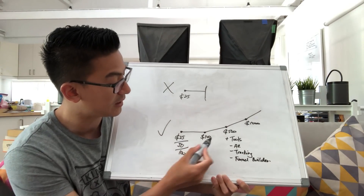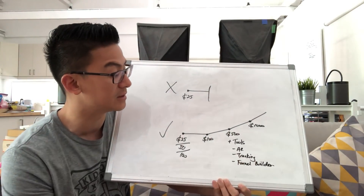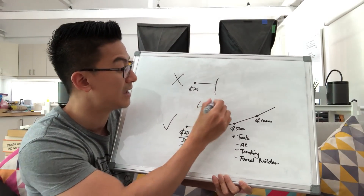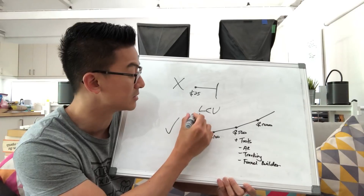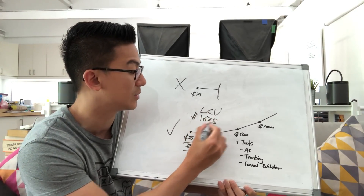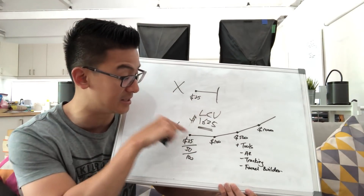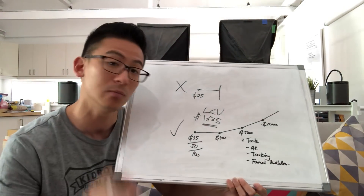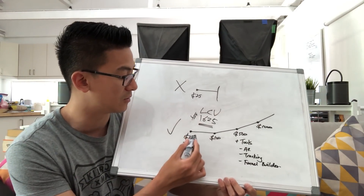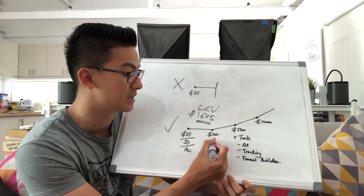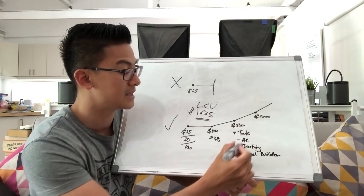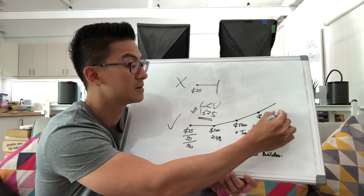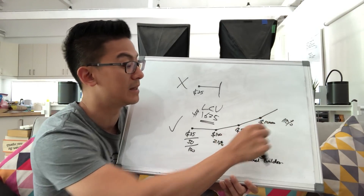If you add this all up — $25 plus $100 plus $500 plus $1,000 — that is $1,625. So the lifetime customer value of this sales funnel is $1,625. That means potentially every single customer who buys this product range from you can make you $1,625. Not all of them will go all the way through — maybe only 20% who buy the first level will buy the next, and maybe only 10% will buy the highest level — but that's okay.